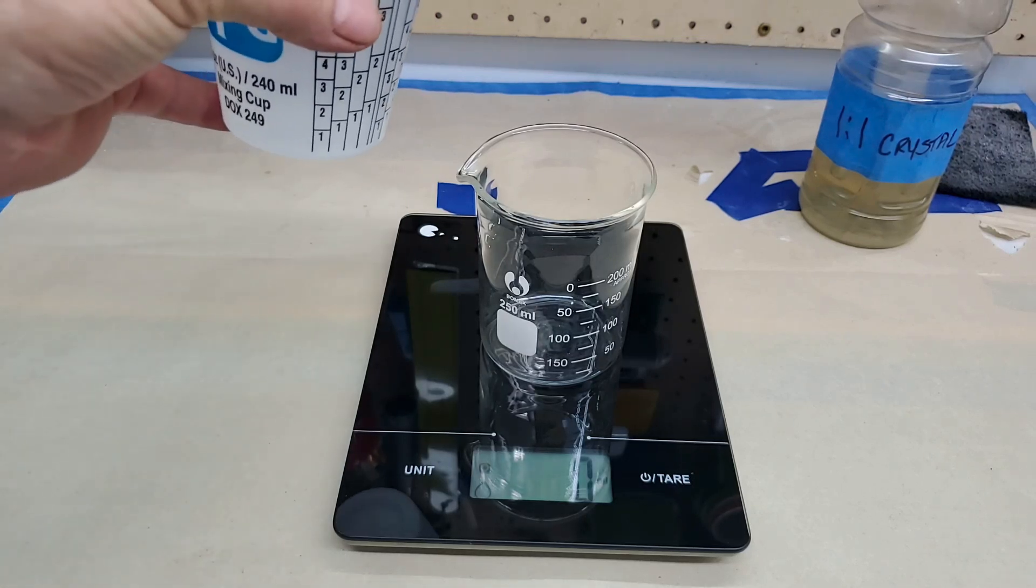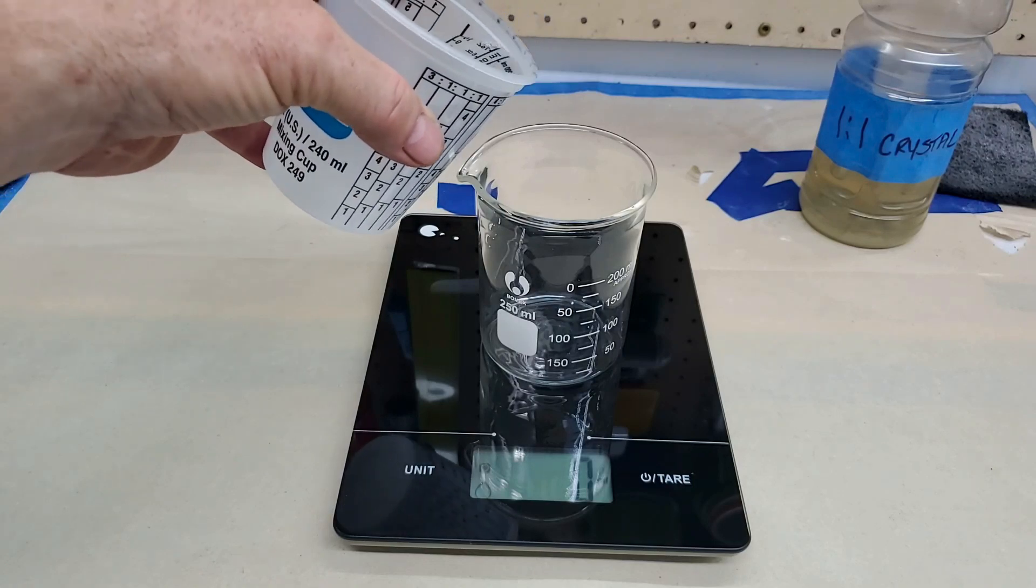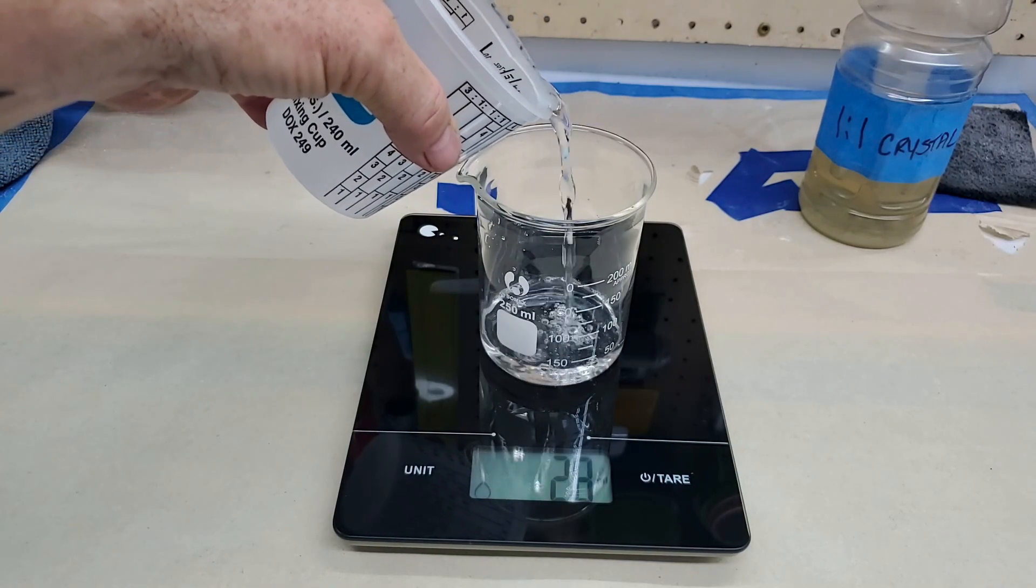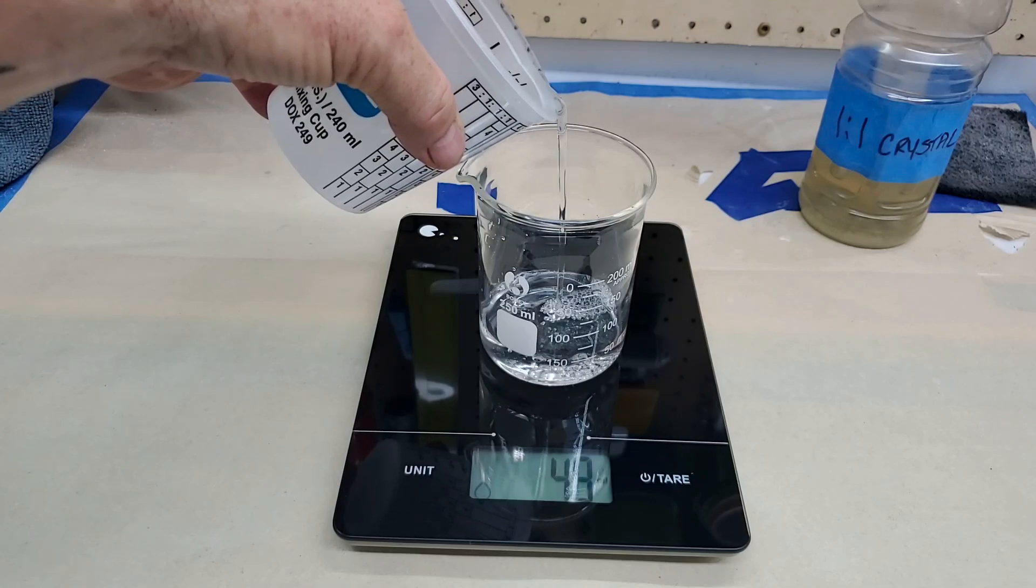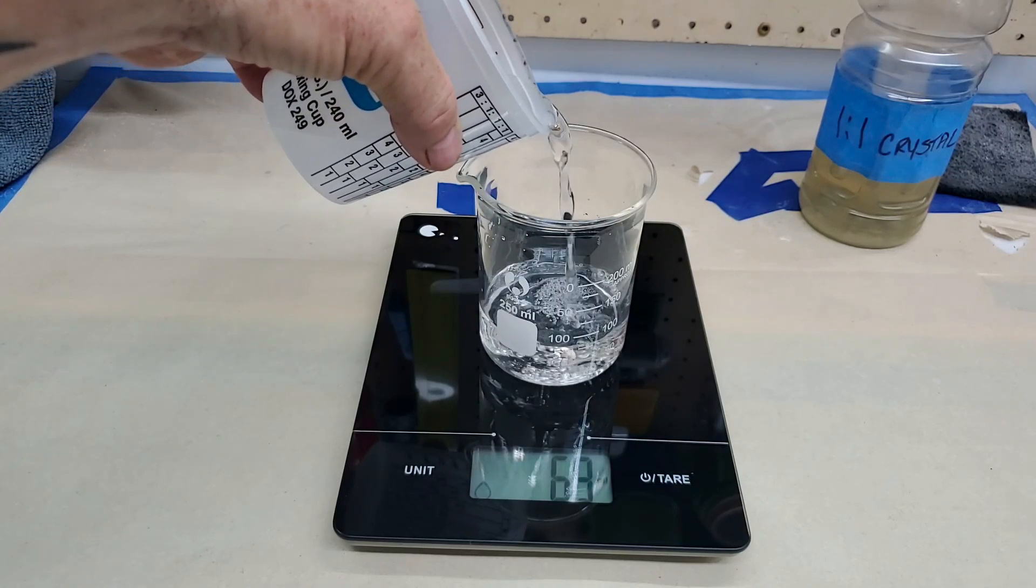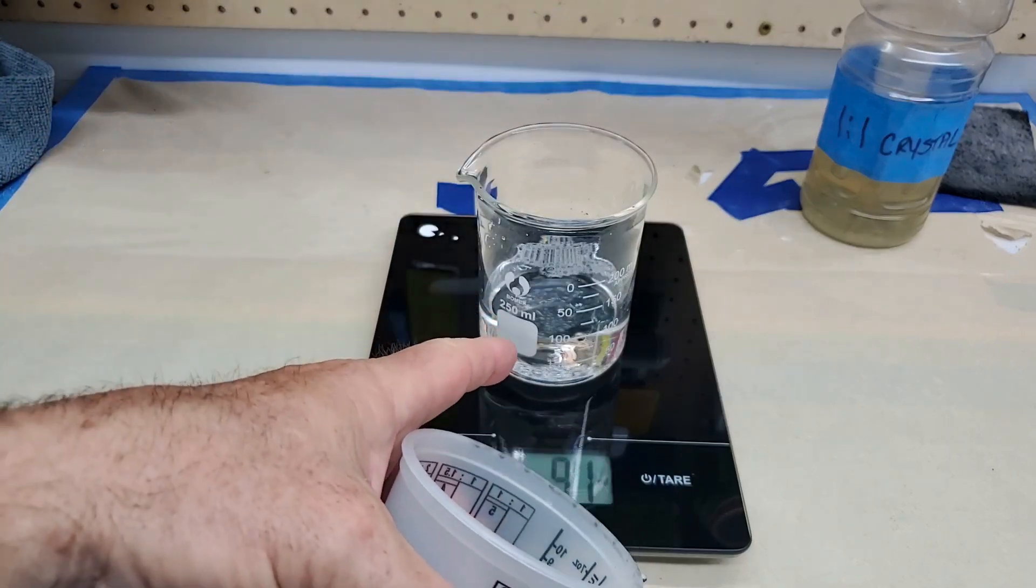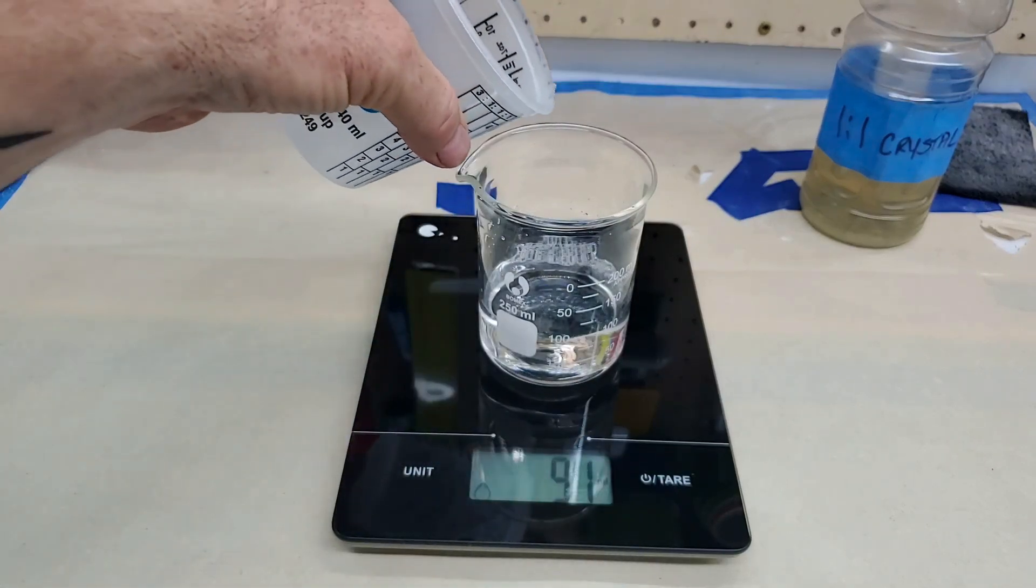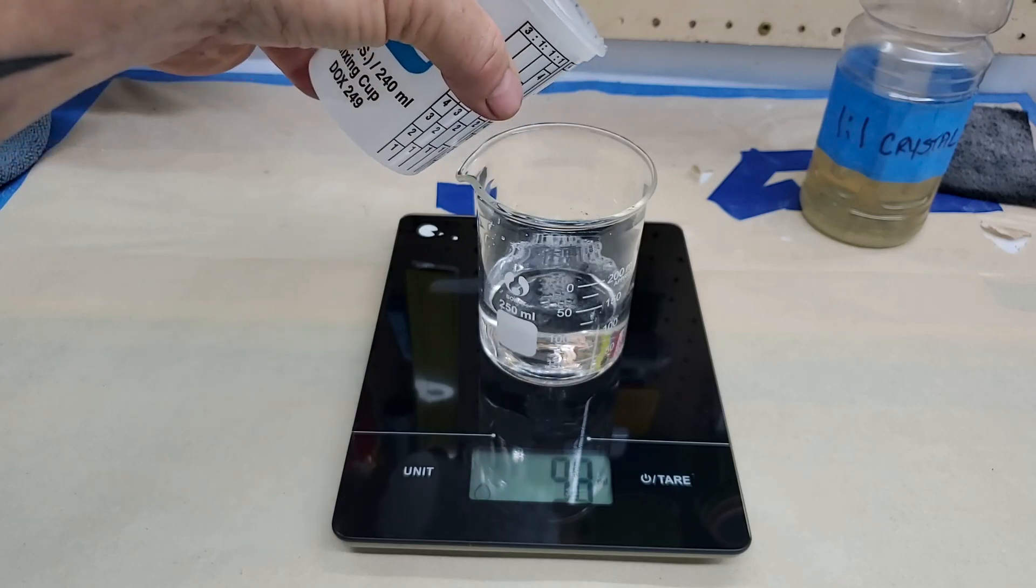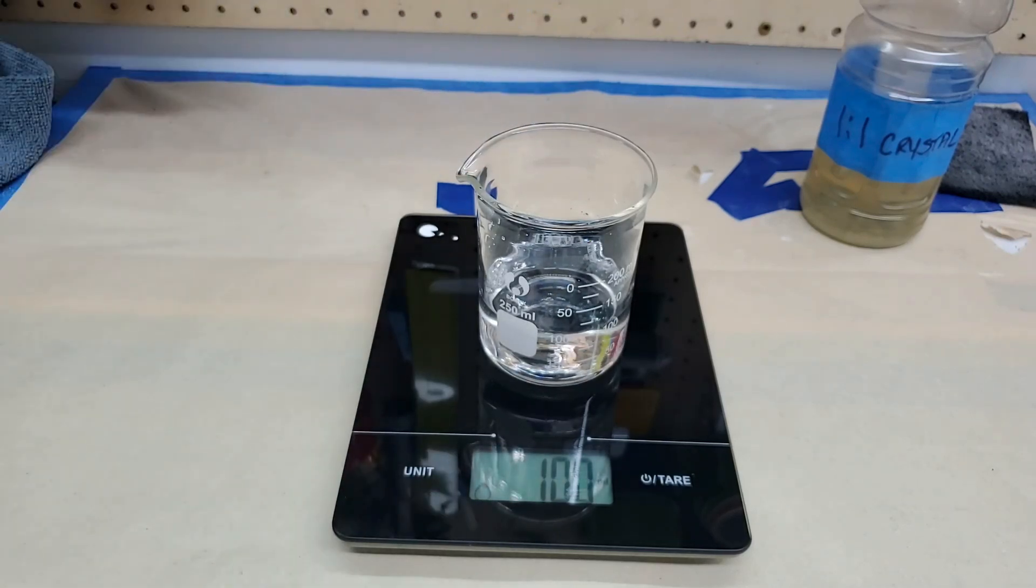So then we're going to add 100 milliliters. There are markings on the side of this container but I like to go by weight just to be a little more accurate. There we go, that's 100 milliliters of water.